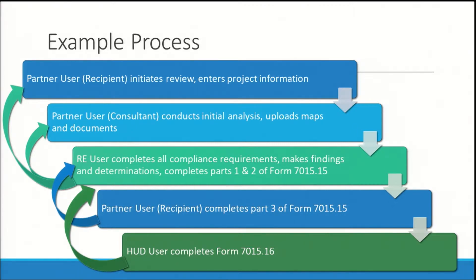Once the responsible entity user has the review, they will review the partner's work, finalize all requirements, make all findings and determinations, and as necessary, complete Parts 1 and 2 of Form 7015-15, the request for release of funds and certification. They could then assign the review back to the recipient partner to complete Part 3 of the request for release of funds and certification electronically. Finally, the review would be assigned to HUD to complete the 7015-16, the authority to use grant funds. At any point, the assigned user can assign the review back to a previous assigned user as needed.